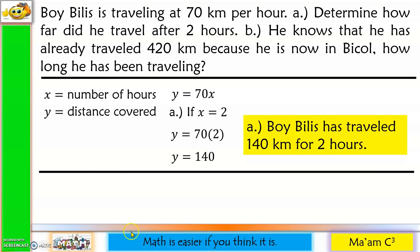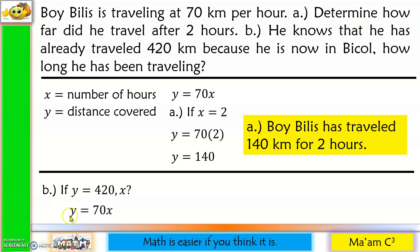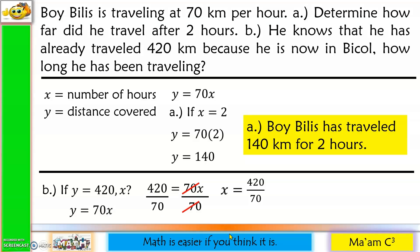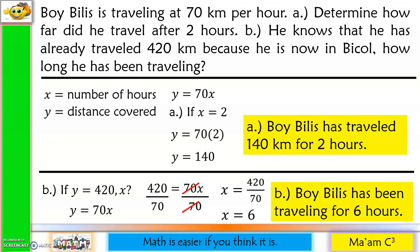For letter B, the distance covered is given and we are asked to determine how long Boy Belize has been traveling. If y equals 420, how many hours has he been on the road? Our function is y equals 70x, and y is given, so we solve for x. Substitute 420 for y and divide both sides by 70. 70 and 70cancel out, so x equals 420 over 70, which equals 6. Therefore, Boy Belize has been traveling for 6 hours.